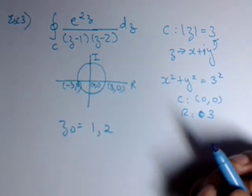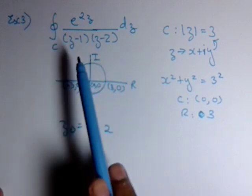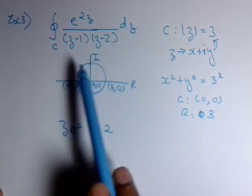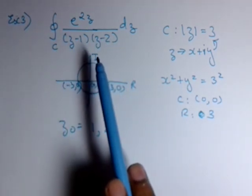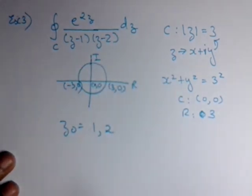So now we have to integrate this, but first of all you have to know that we can't integrate this all together. We can integrate only when there is one z0 if we have to apply Cauchy Integral Formula. So now we will have to separate this into two parts.